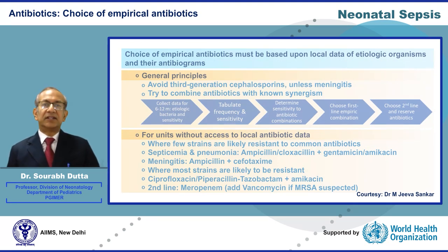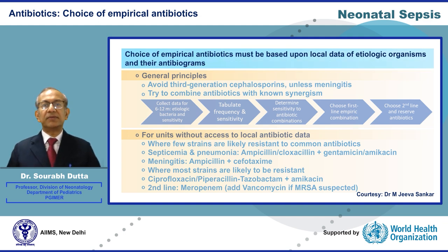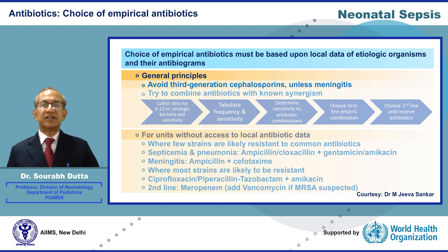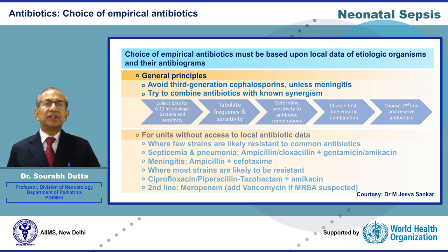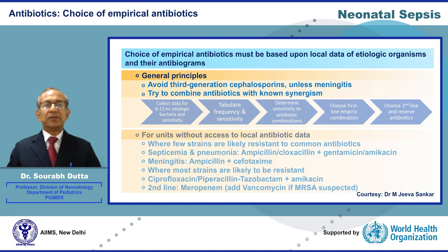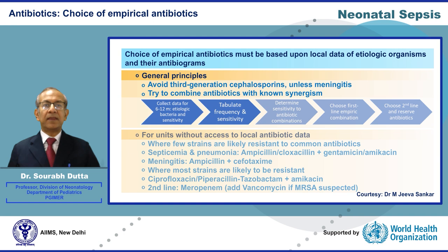Moving on to antibiotic therapy of neonatal Sepsis — each unit must have its own empiric antibiotic policy. The choice of empiric antibiotics must be based upon local data regarding etiologic organisms and their antibiotic sensitivity profiles. While generating an antibiotic policy, one must try to avoid third-generation cephalosporins unless there is meningitis and try to combine antibiotics with known synergism. The first-line empiric combination must cover at least 60 to 70% of etiologic organisms in the unit and the second line at least 80 to 90%. Data on etiologic bacteria and their sensitivity from the last 6 to 12 months should be used to tabulate organism frequency, sensitivity patterns, and determine the best antibiotic combination.